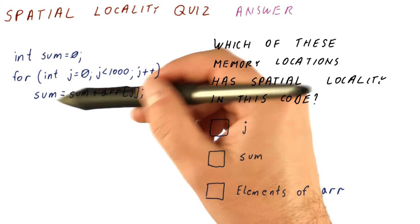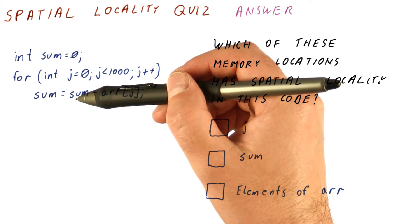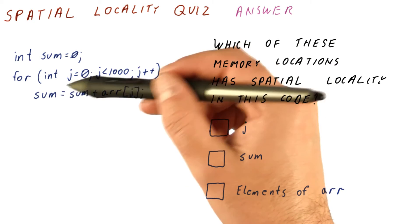Same for sum. We are accessing sum very often by itself, but we're not sure whether we are accessing anything that is close to sum.